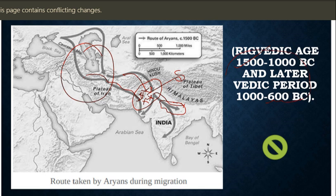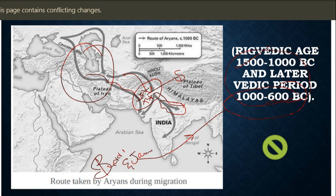This age spans 1500 to 600 BC. Even in the later Vedic period, the emergence of Buddhism and Jainism takes place. We will go on to look at the picture and the conditions of the Rig Vedic people.